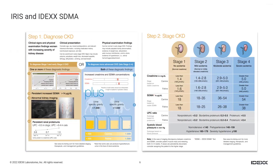When we think of IRIS, we have the staging scheme — we look at creatinine for that. Since about 2018 or 2019, SDMA has also been part of that staging. So the SDMA level will influence which stage of kidney disease a patient is at if there's a persistent elevation. Beyond creatinine and SDMA, we're also going to be evaluating things like a UPC ratio and blood pressure.